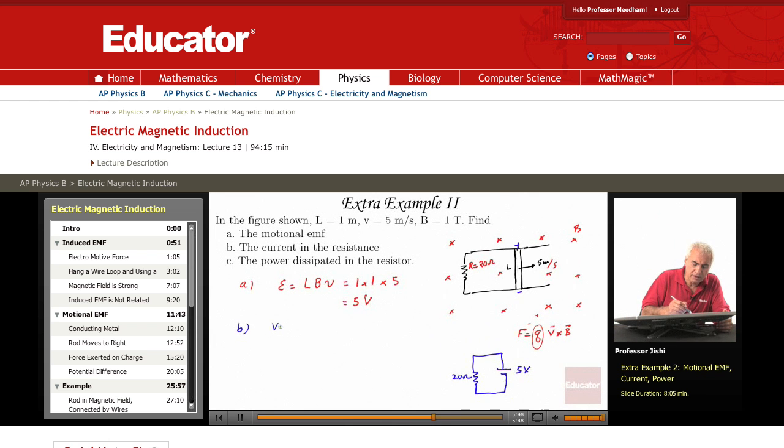Ohm's law: V equals IR, or in this case E. The EMF is equal to IR. So the current I is E over R. E is 5 volts and R is 20 ohms. So this is 5 over 20, which is 0.25 amperes. So the current is 0.25 amperes.